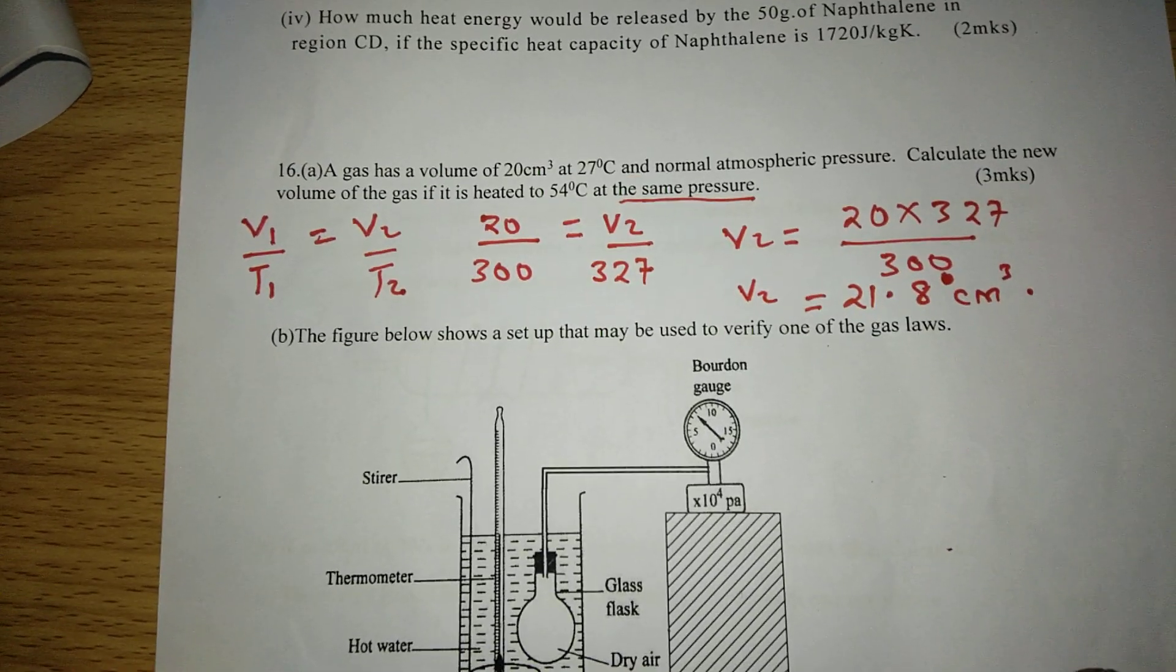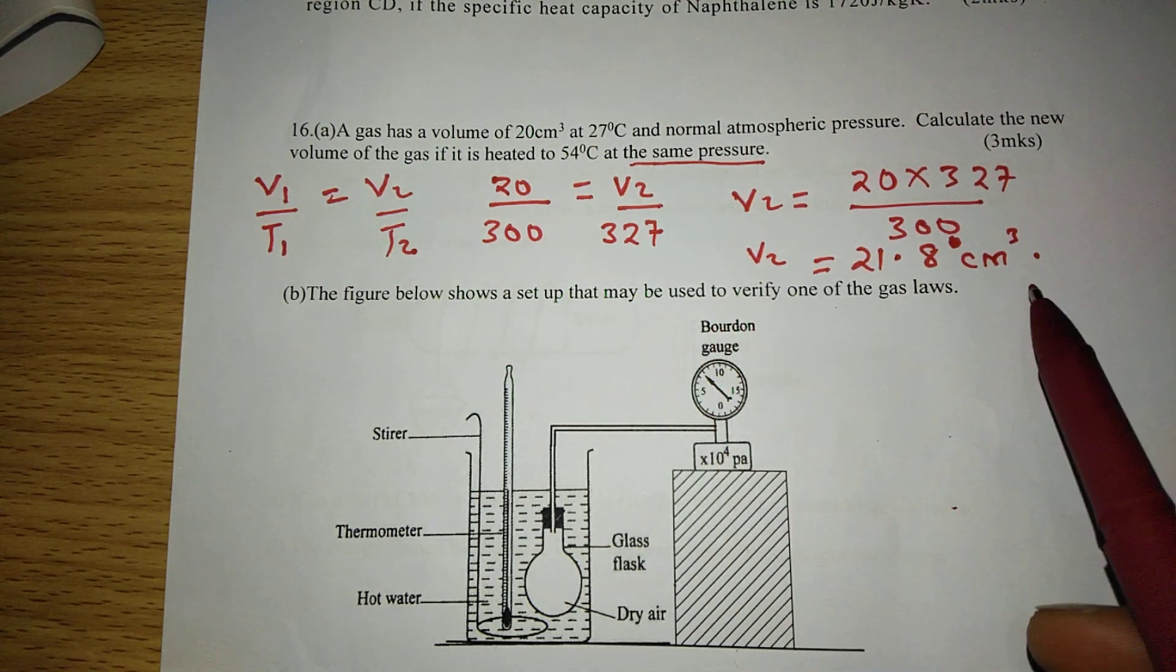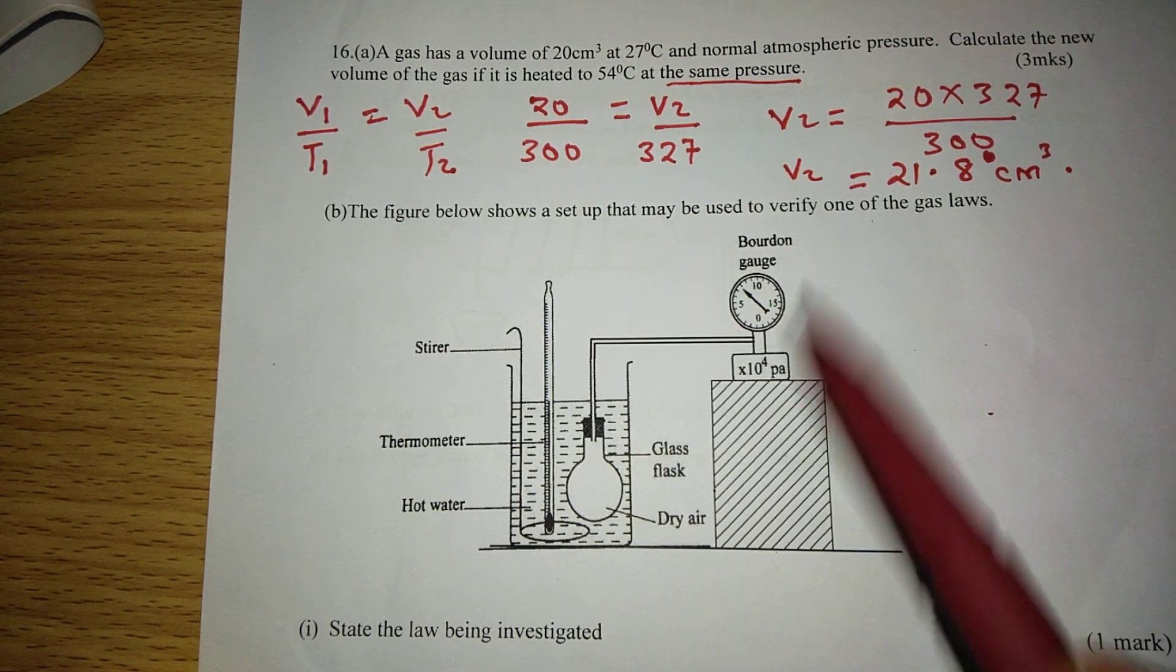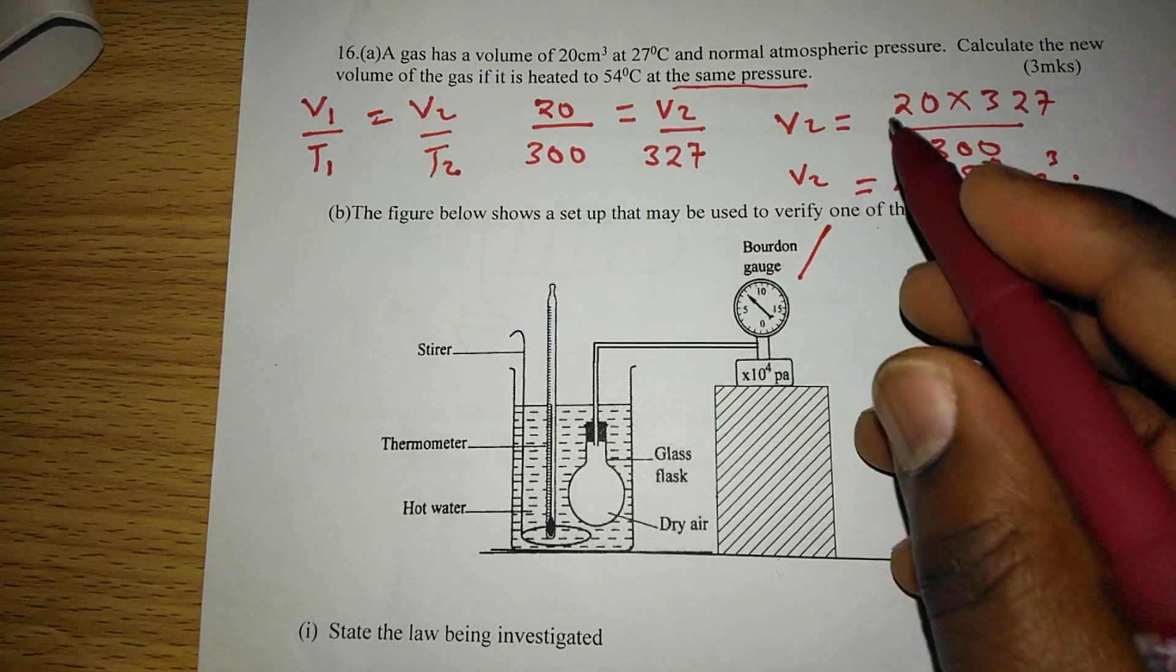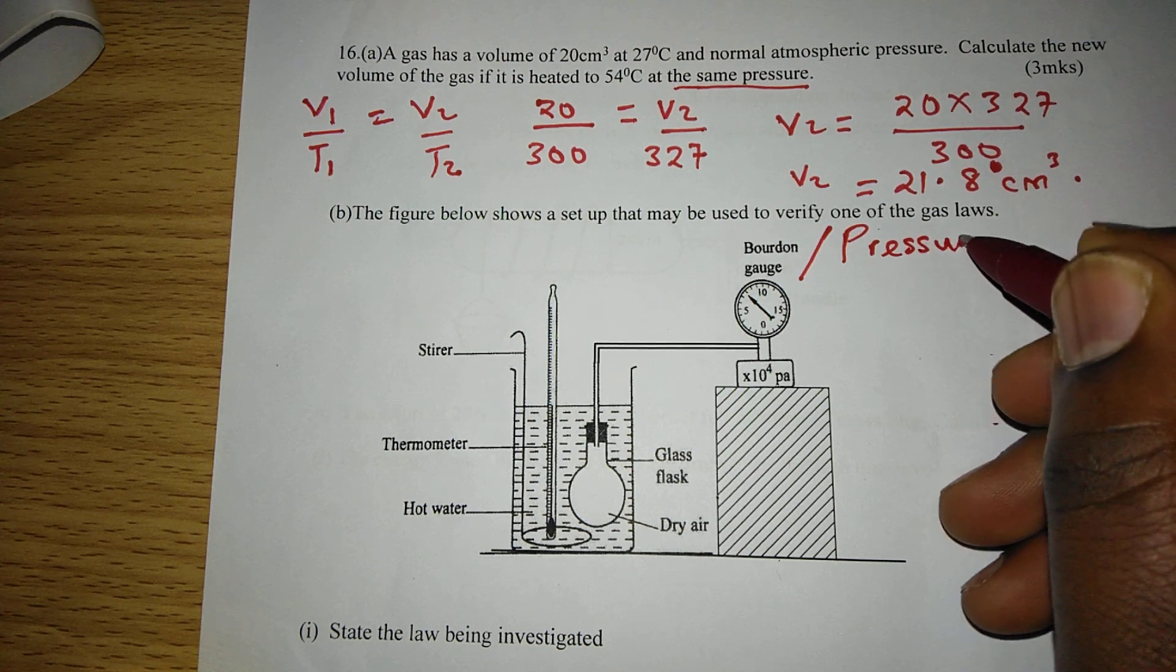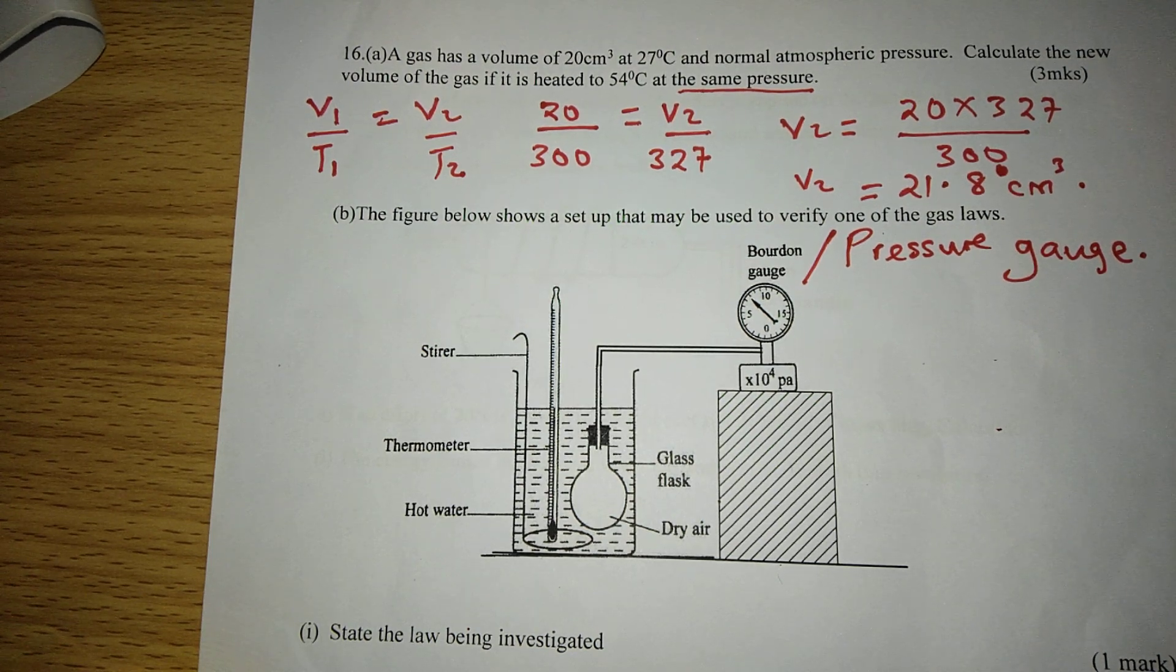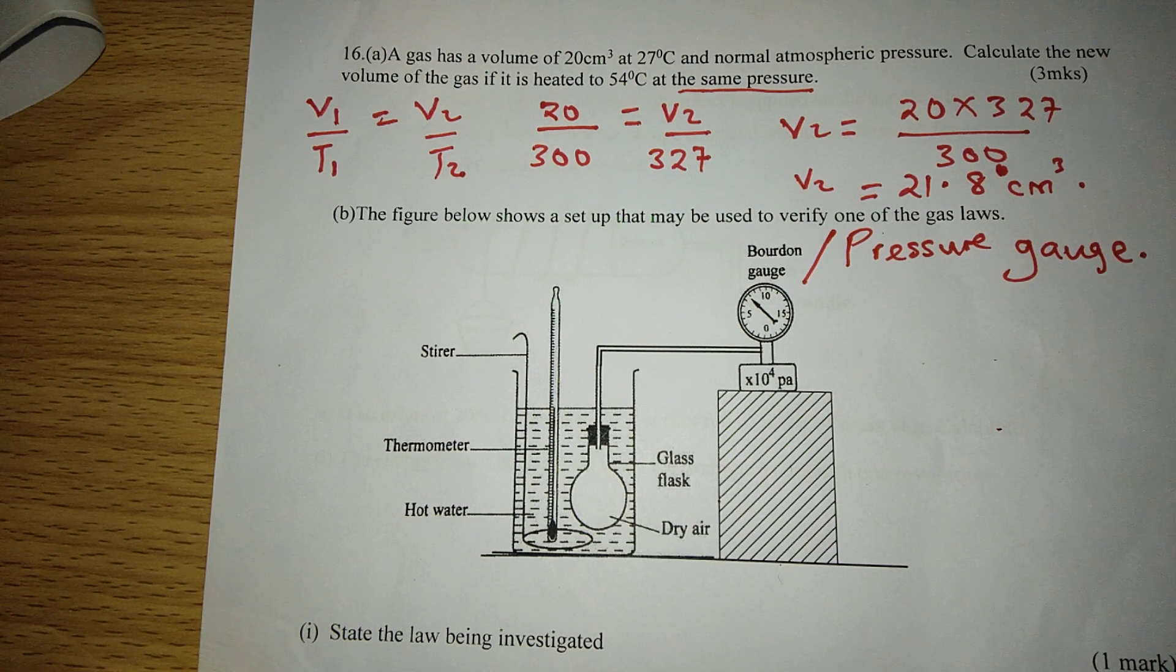Then in the second part, the figure below shows a setup that may be used to verify one of the gas laws. So we have a bourdon gauge here. A bourdon gauge measures pressure. And instead of this, you can sometimes find a pressure gauge in the experiment. So these are instruments which can be used alternatively. In case you see pressure gauge or bourdon gauge, they are all measuring pressure.